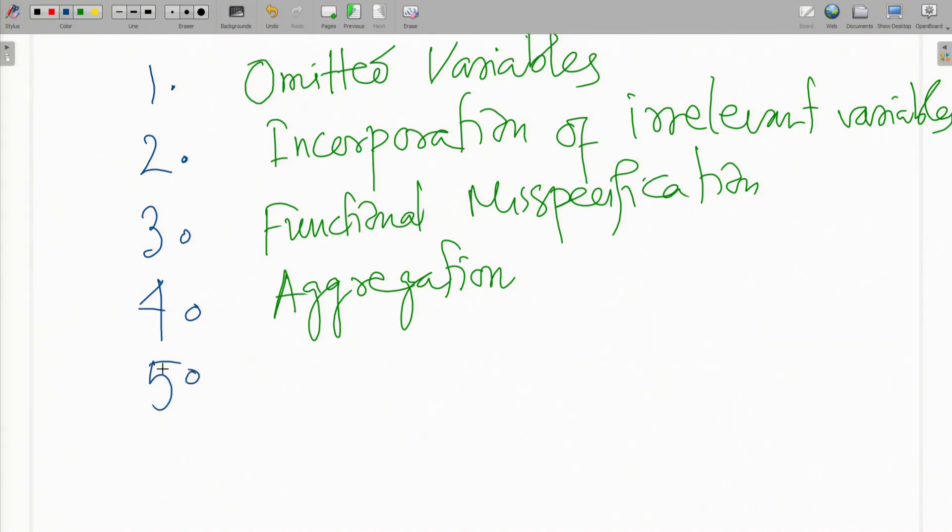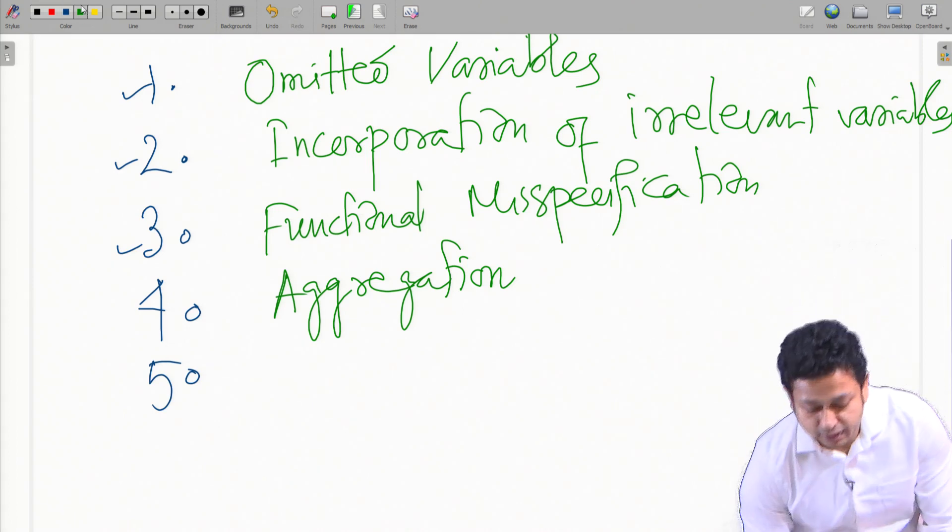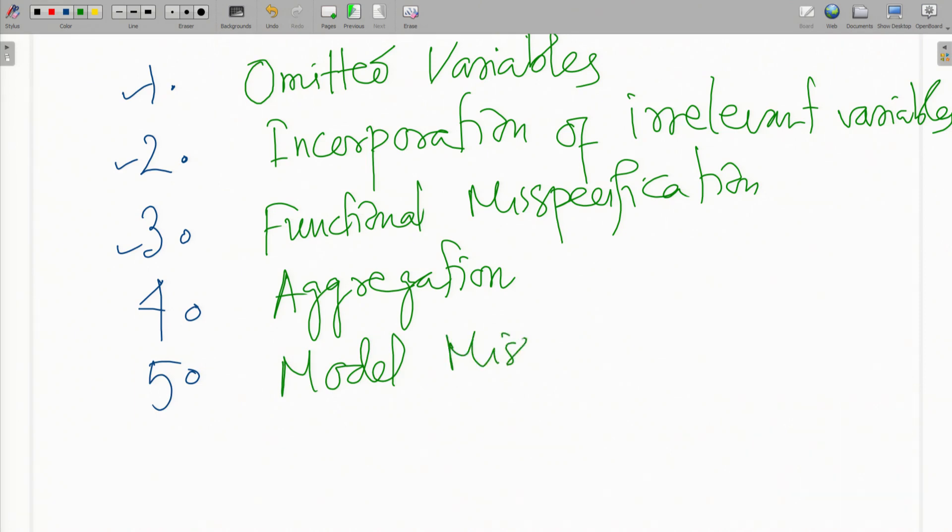Now all these different items I have mentioned here can actually sum up in something called model misspecification. In model misspecification you have all these different reasons that can come under the umbrella. Model misspecification can also be caused because of the assumptions that you have made.